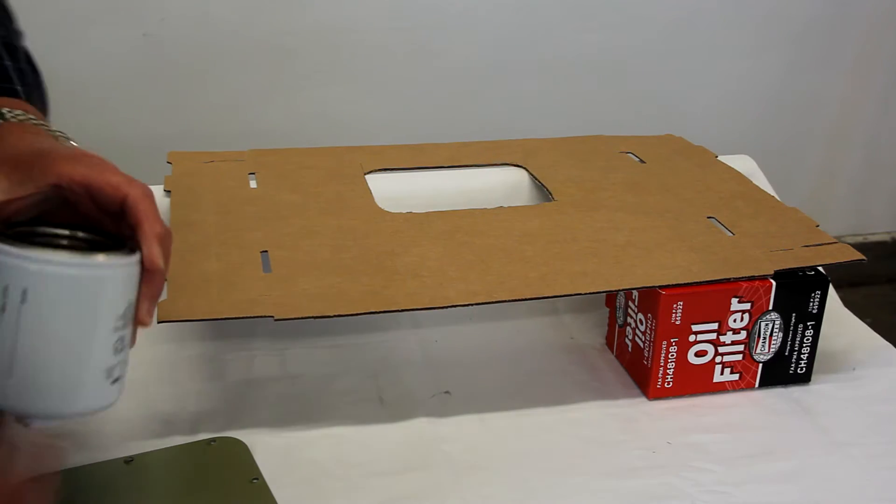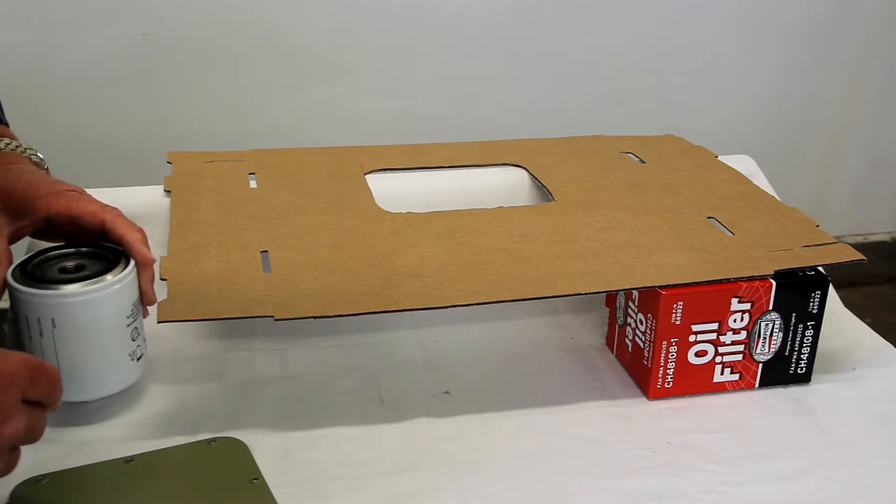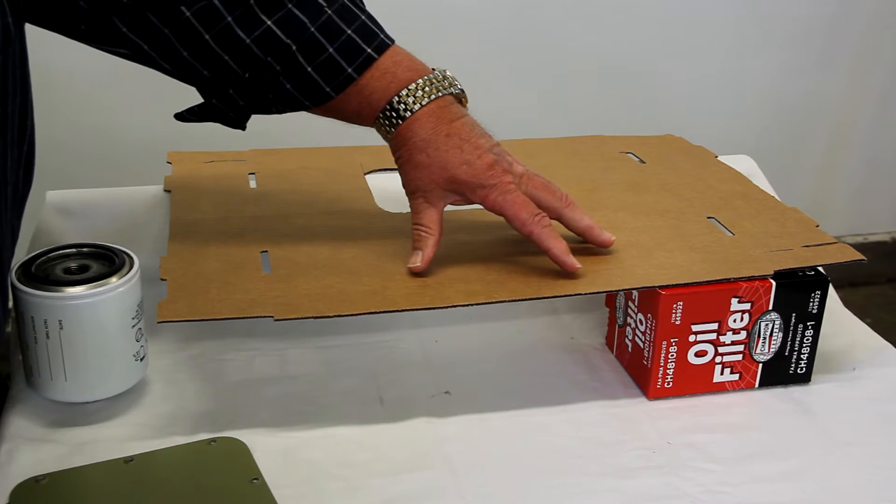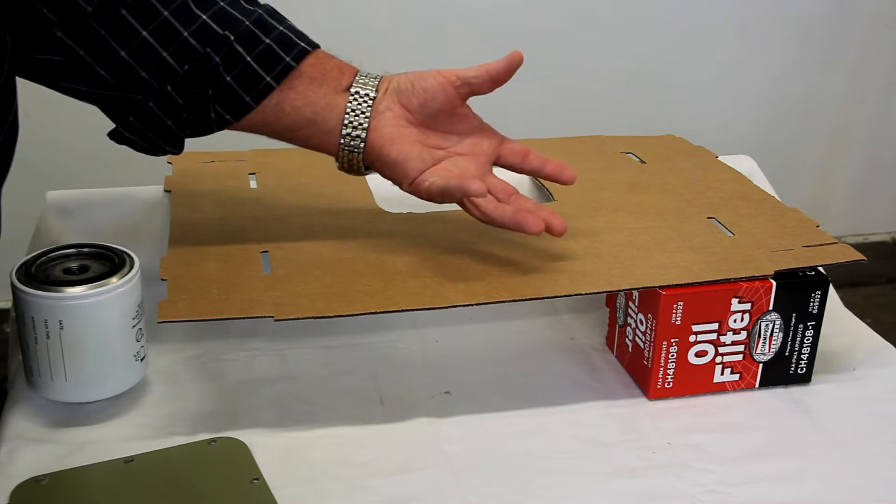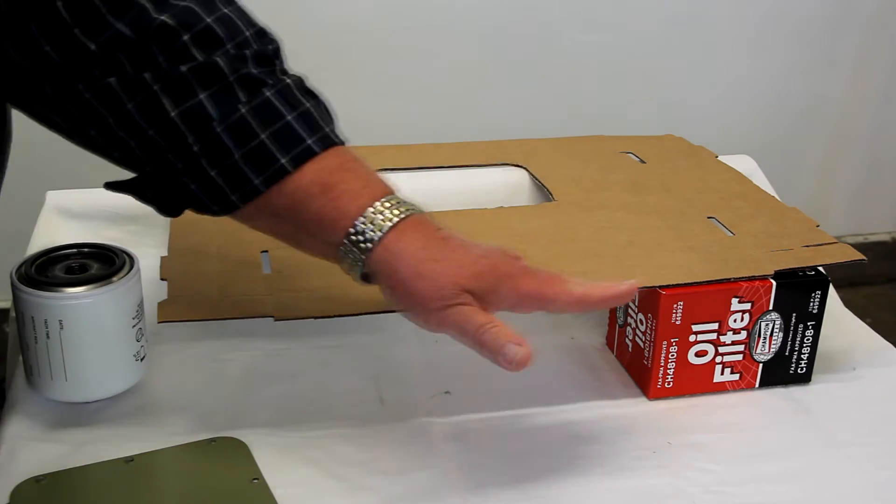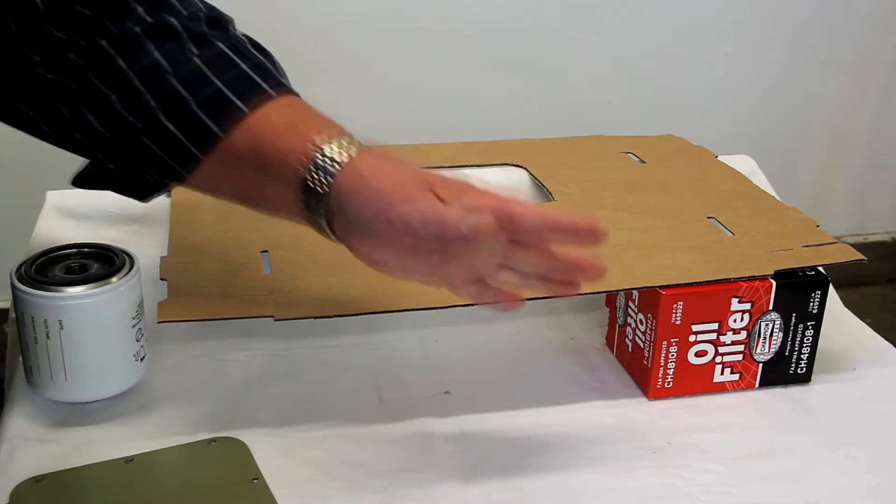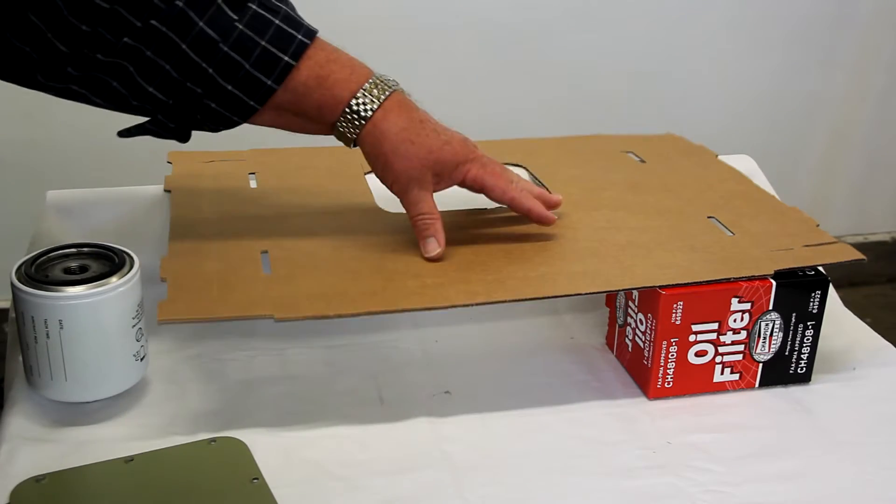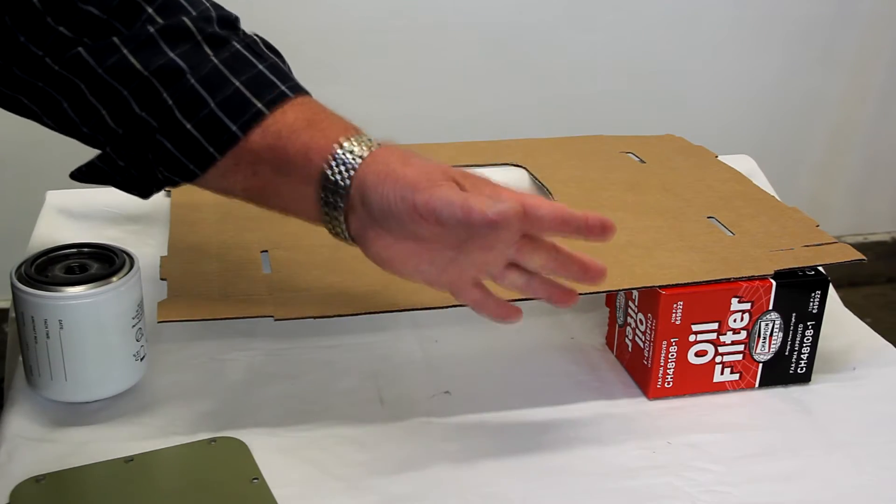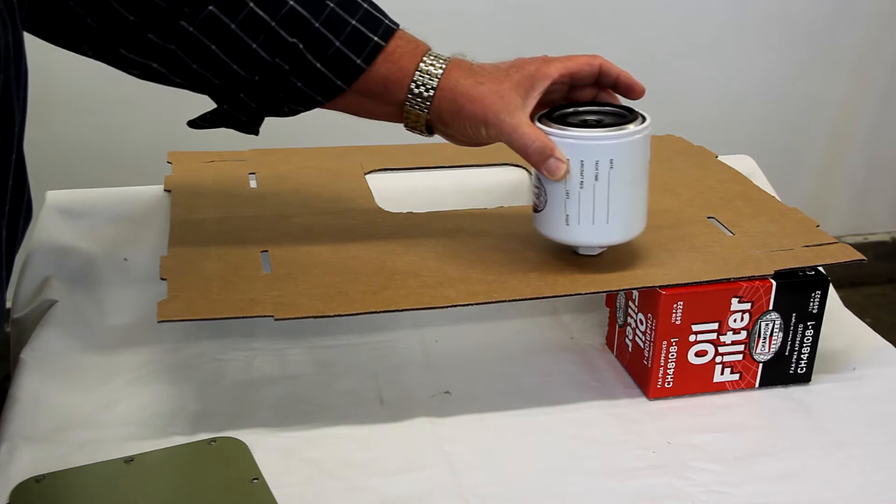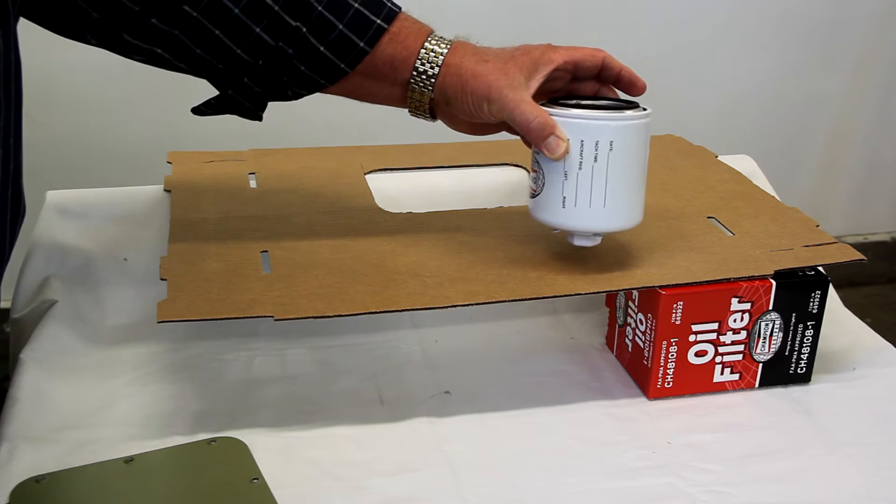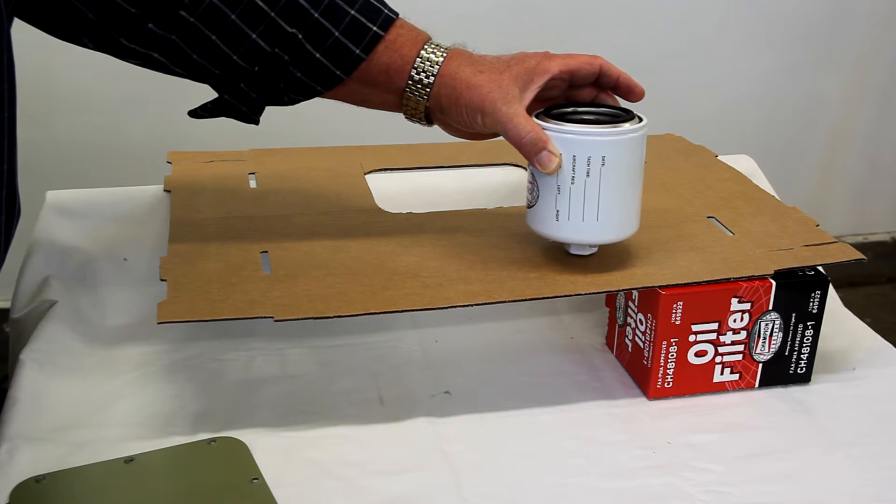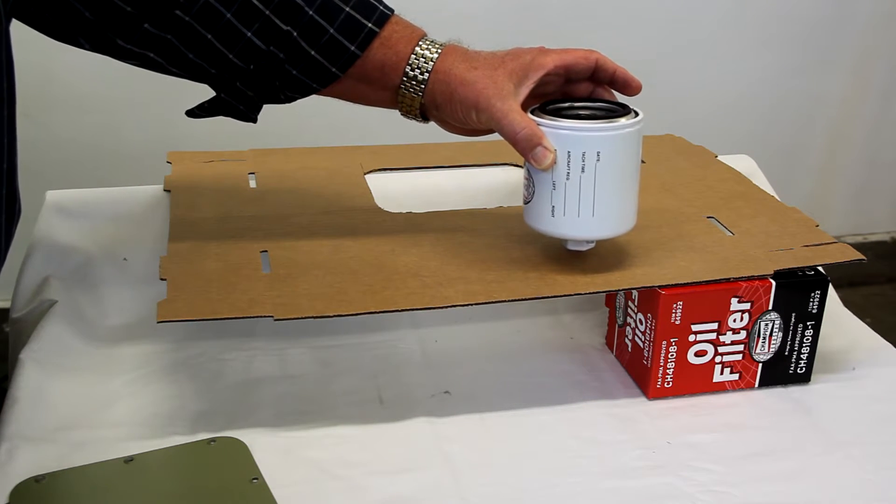I'm going to ask you to use your imaginations. Imagine that this piece of cardboard is the bottom cowling, bottom of your engine nacelle cowling. There's going to be a side cowling here. Typically, if this was the left engine, this would be the inboard cowling. And the oil filter is going to sit in the cowling about like this. There's very little room between the bottom of the filter and the bottom of the cowling.